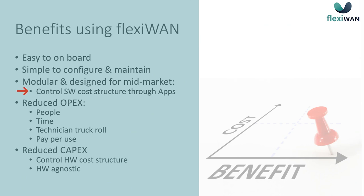When we talk about mid-market and retail, you control the cost structure of the hardware and software. In total, it reduces OPEX — the people you need to invest, time it takes, sending a technician to the customer site — and you pay per use rather than as a commitment for the future. That's reduction of both OPEX and CAPEX, because you control the cost factor of the hardware and can even bring your own hardware.